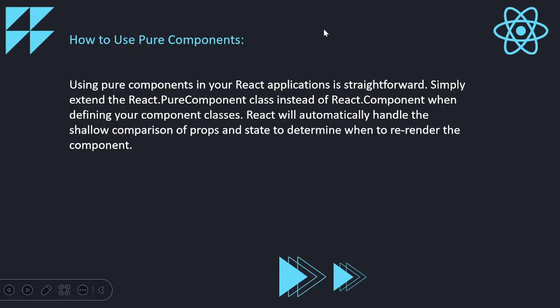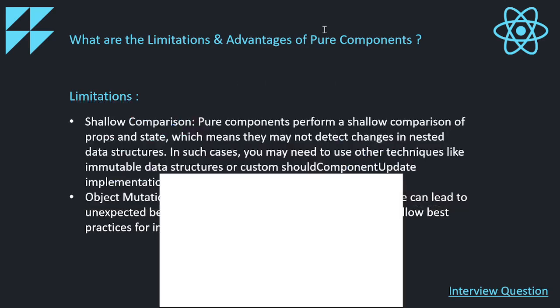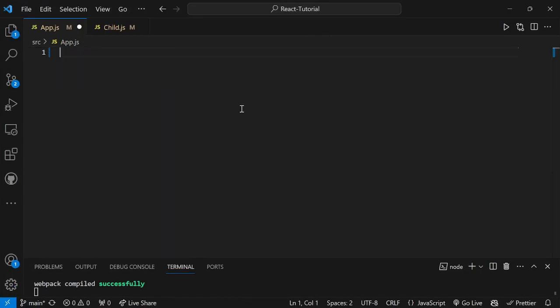Using pure components in your React application is straightforward. Simply extend the React.PureComponent class instead of React.Component when defining your component classes. React will automatically handle the shallow comparison of props and state to determine whether to re-render the component or not. When importing, instead of writing 'import React from react', we write 'import React, PureComponent from react'. One important thing to notice: pure components are a concept of class-based components. For functional components, we have a hook for this purpose — that is the useMemo hook, which we will see in the upcoming video.